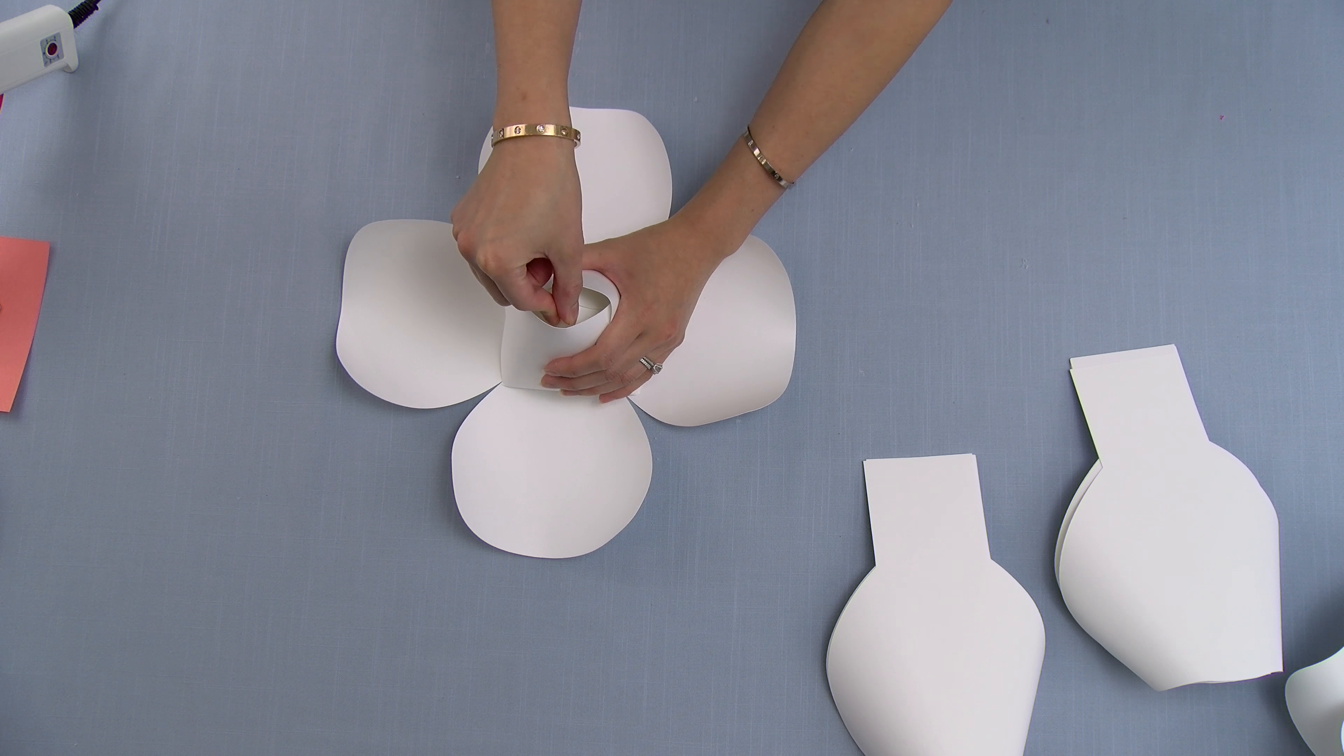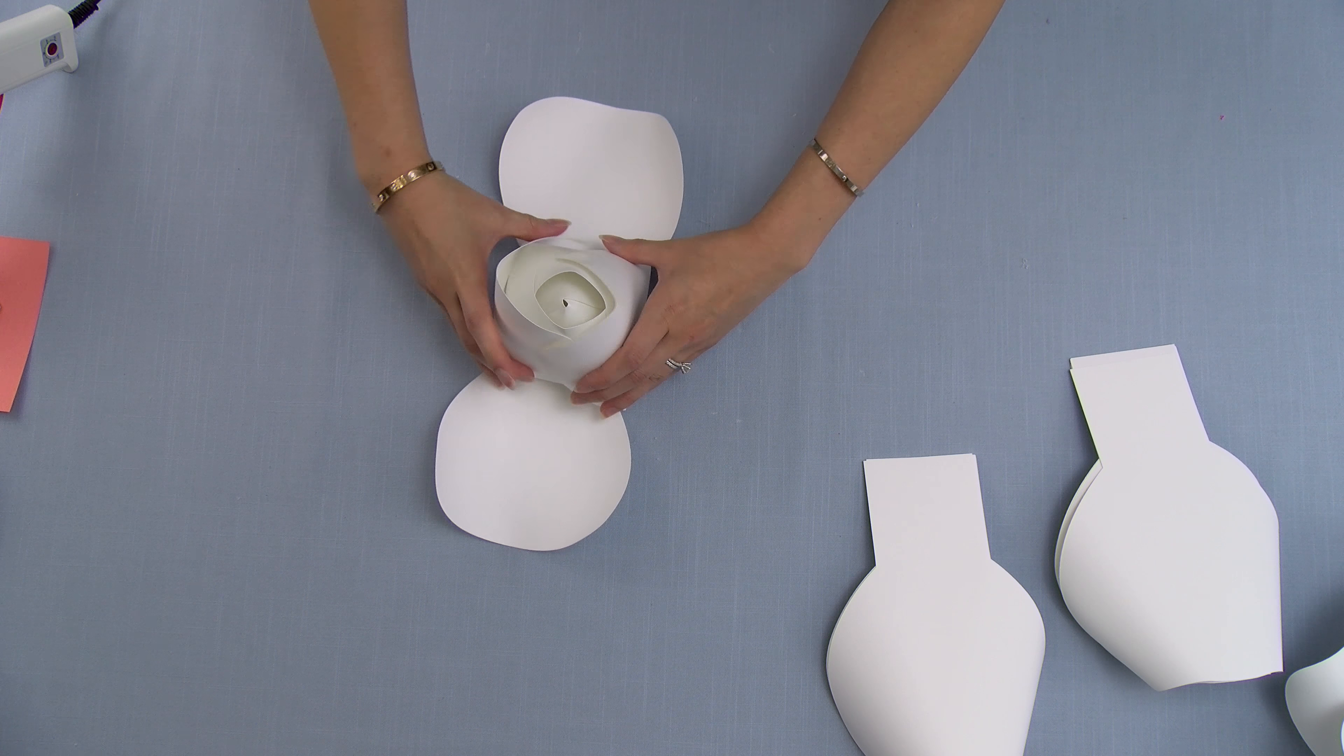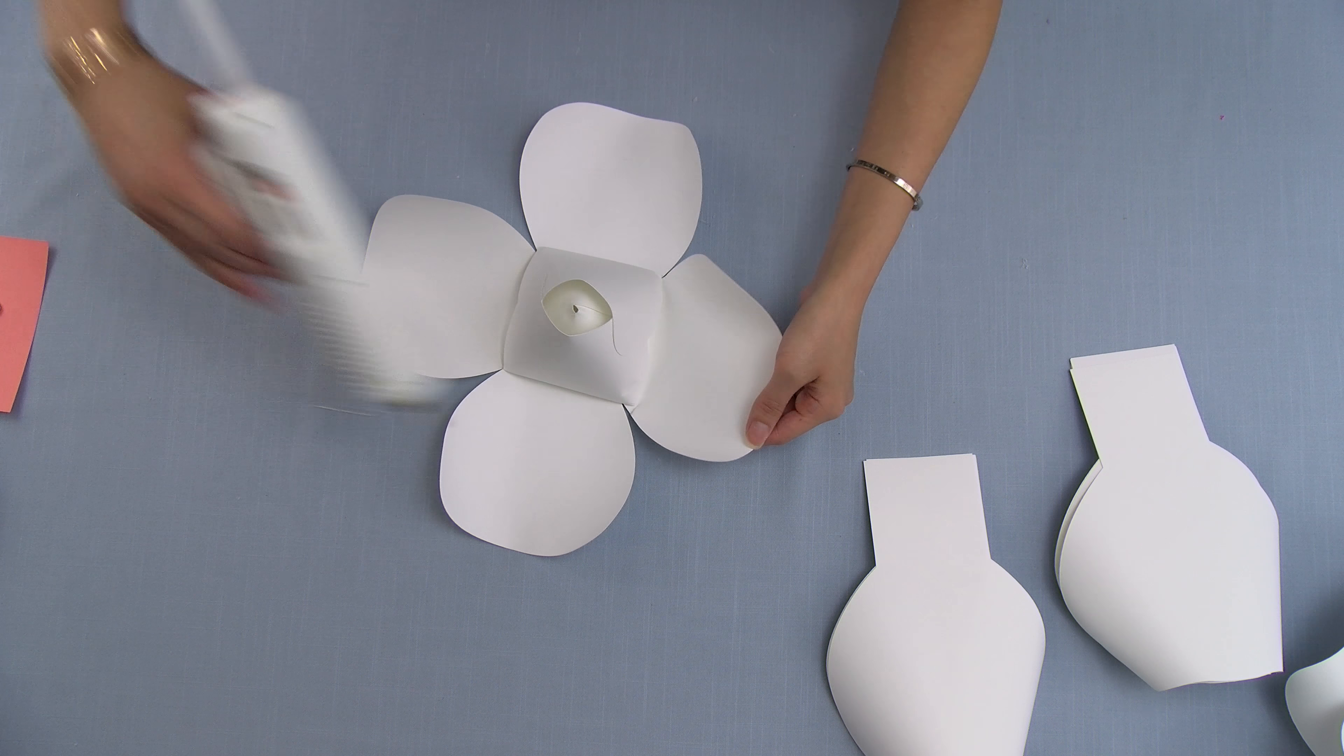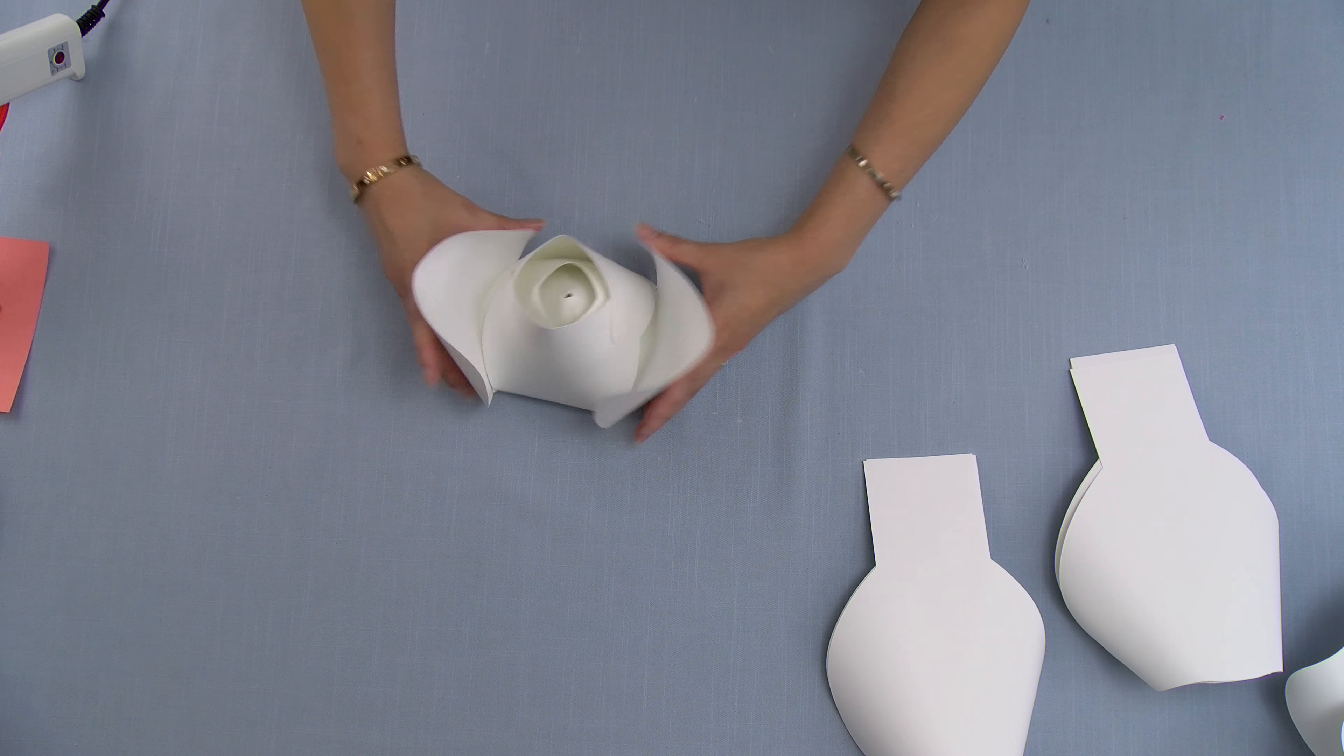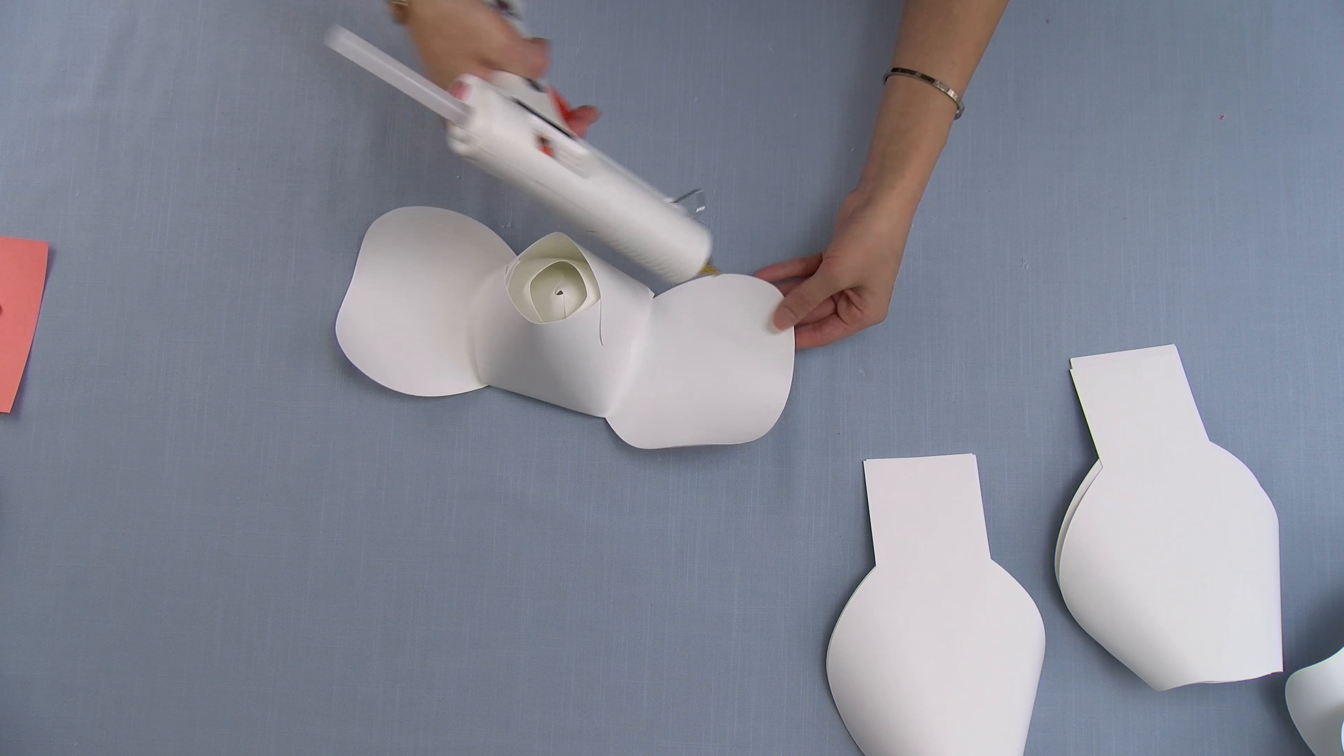And then we're going to do the same thing with gluing the petals together, leaving more gap than the previous layer. And then for the last two petals, you want to put glue on both sides.